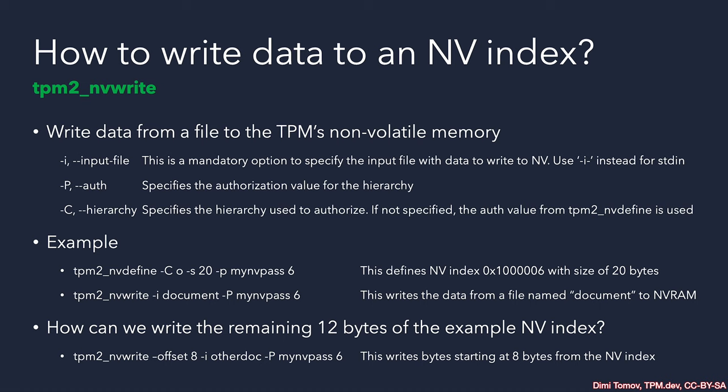For example, assume our document being stored has only 8 bytes. We would then want to write the remaining 12 bytes in a second operation, passing the same index but adjusting the offset setting, telling the TPM2 tool to instruct the TPM to start writing from an offset of 8. It is mandatory to specify input data, which can come from a file or from standard input. Note that to use standard input, a dash must immediately follow the dash-I option.